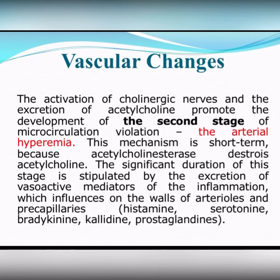Second stage: the activation of cholinergic nerves and the extraction of acetylcholine promotes the development of the second stage, arterial hyperemia. This mechanism also is not long. Acetylcholinesterase destroys acetylcholine. The significant duration of this stage is stipulated by the extraction of other active mediators of inflammation, which influence the walls of arterioles and precapillaries.